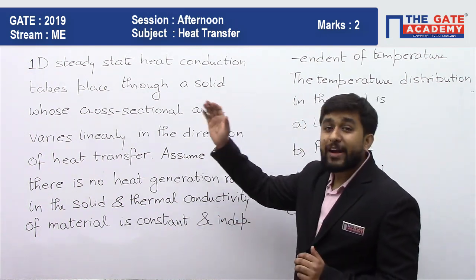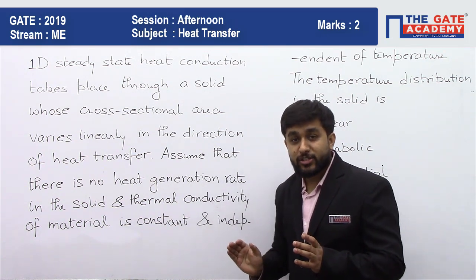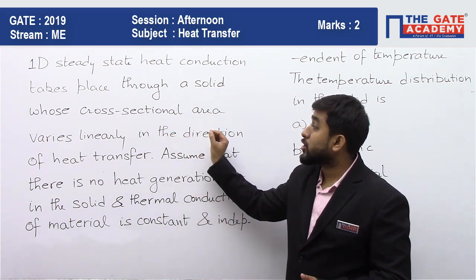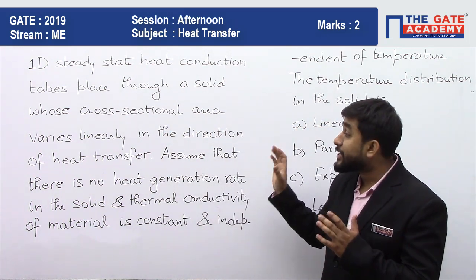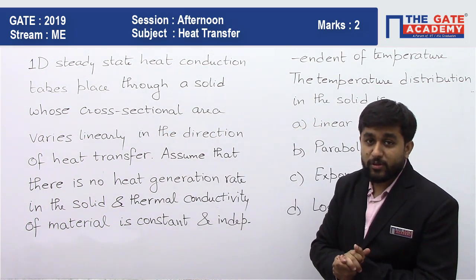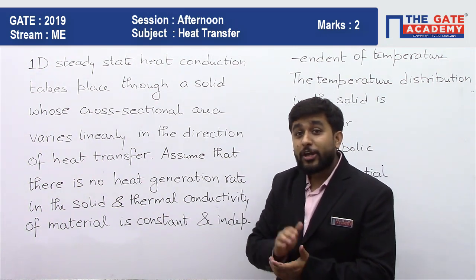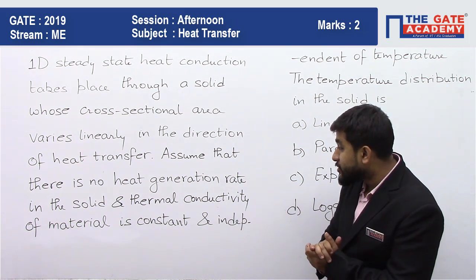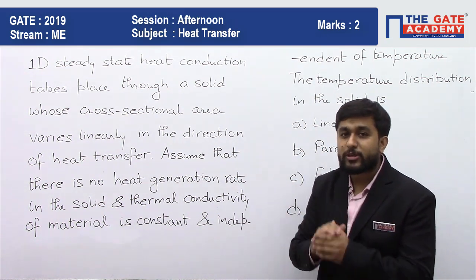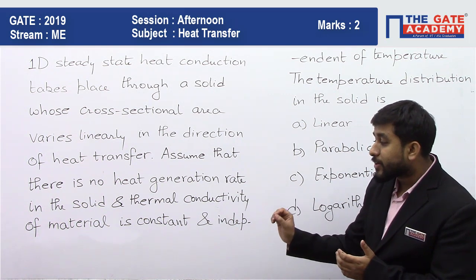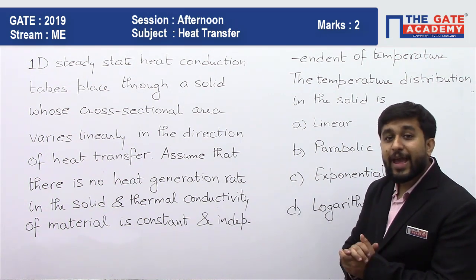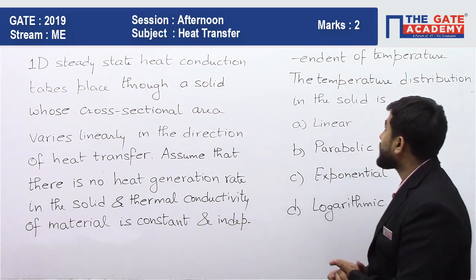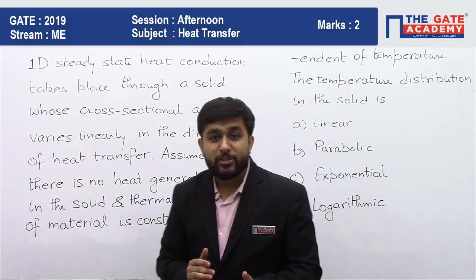The question says one dimensional steady state heat conduction, let us assume that dimension to be x, takes place through a solid whose cross sectional area varies linearly in the direction of heat transfer. So basically a, the area of cross section, is a linear function of x. Assume that there is no internal heat generation rate in the solid, so q dot g equals zero, and thermal conductivity of the material is constant and independent of temperature. So your k is a constant, it is not a function of x. What is the temperature distribution in the solid?